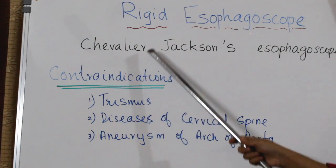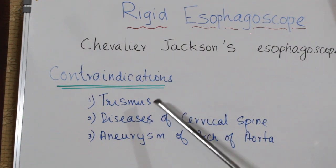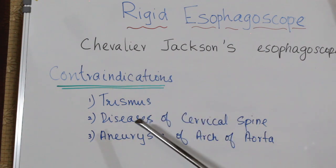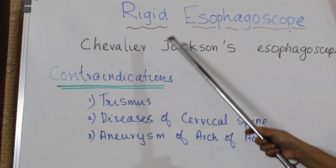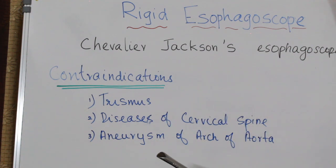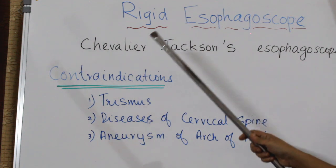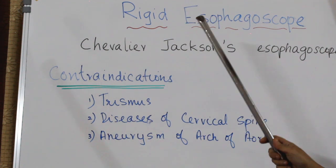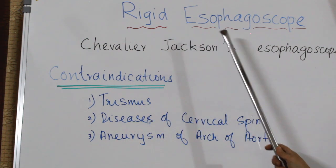Contraindications of rigid esophagoscopy include: trismus, where the patient cannot open the mouth; diseases of the cervical spine such as cervical trauma, spondylosis, and kyphosis; and aneurysm of the arch of the aorta, due to fear of rupture and fatal hemorrhage. If any of these contraindications are present, use flexible esophagoscopy instead.